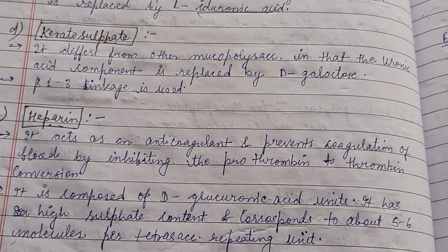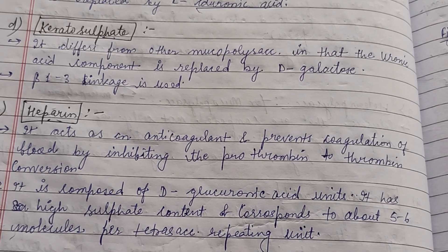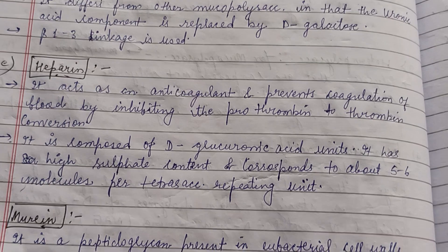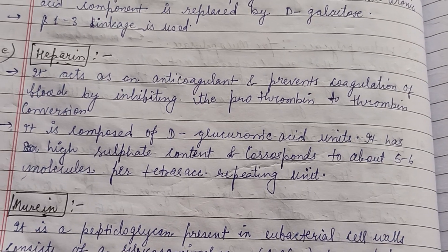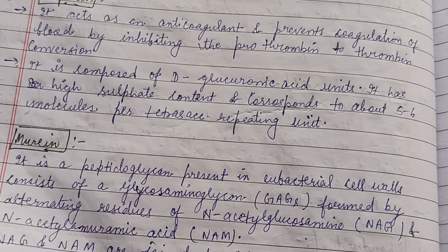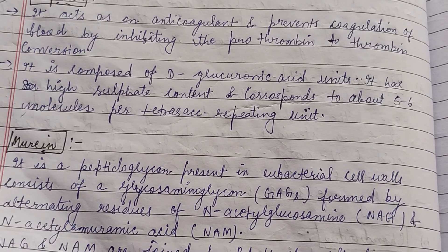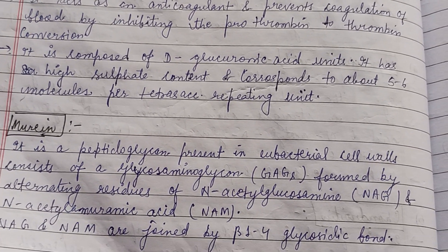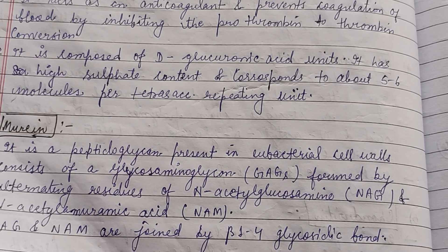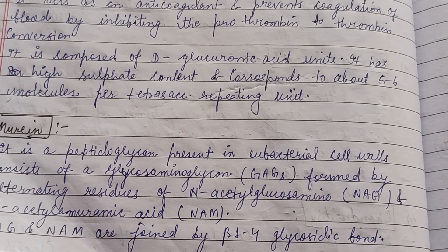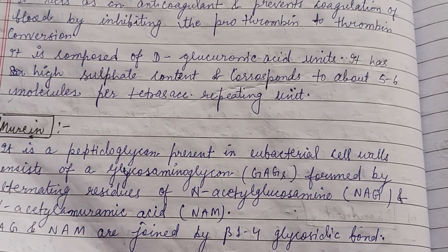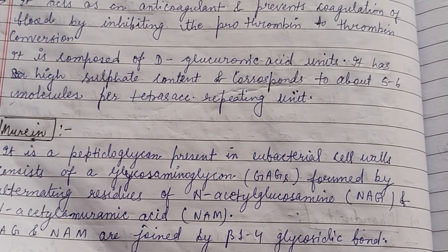Heparin is an anticoagulant that prevents coagulation of the blood by inhibiting the conversion of prothrombin to thrombin. It contains D-glucuronic acid. Murein is a peptidoglycan present in bacterial cell walls, consisting of glycosaminoglycans (GAGs).